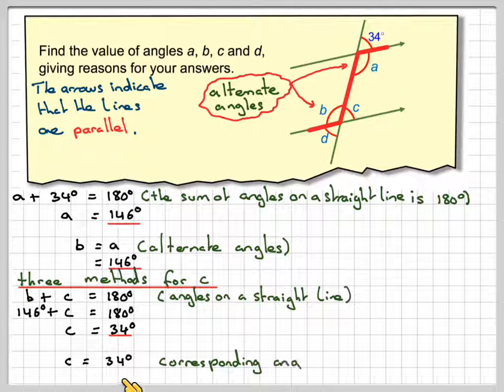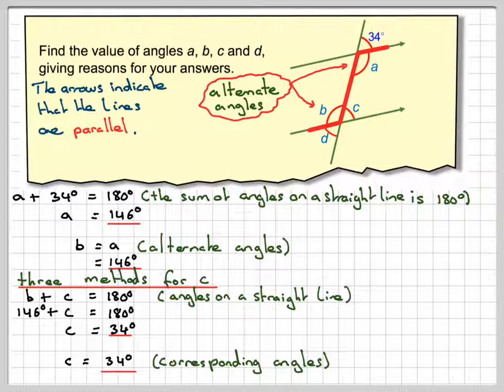Another method is that C will actually be equal to 34. We can say it directly because it is corresponding to these angles. So, these two angles here are equal.